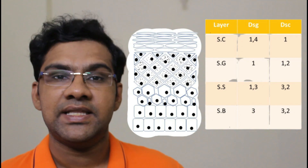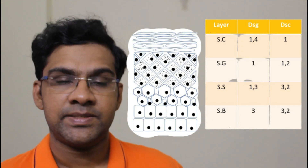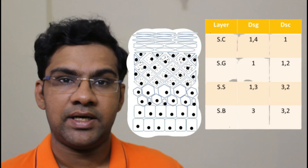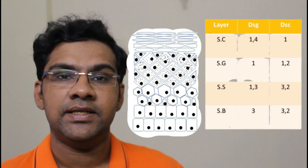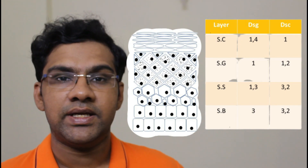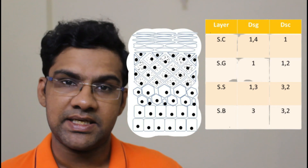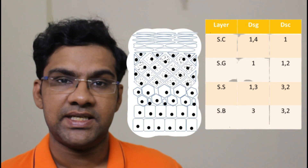Desmocollins are of three types: the first is present in the superficial layers of the skin, the second is present abundantly in the heart, and the third is present in the basal layers of the skin. Let's complete the structural aspects first and then discuss the applied aspects.